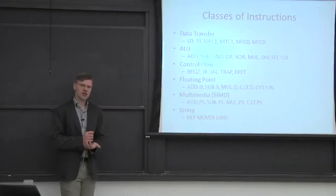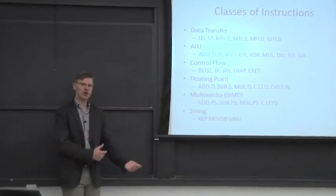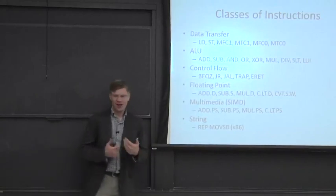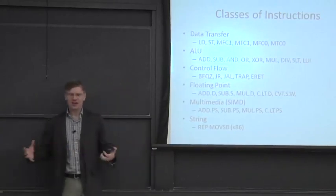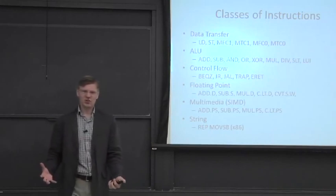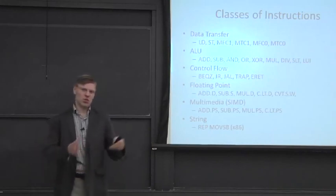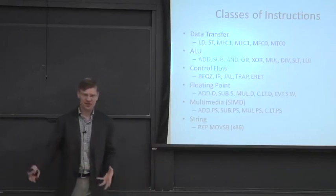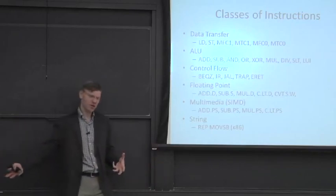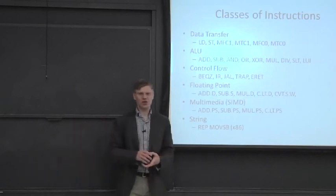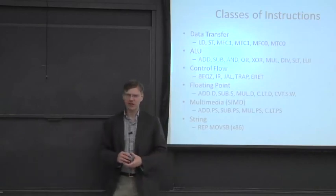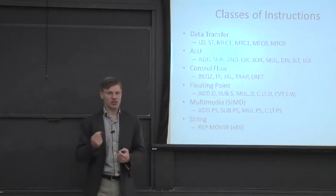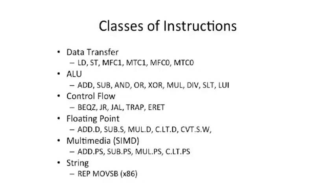Now we're going to change off of machine model and talk about other aspects of instruction set architectures. There's the fundamental machine model: how many registers you have, what type of register access you have, do you have stack-based, do you have an accumulator, do you have a register-register or a register-memory architecture? We also need to talk about the fundamental operations and instructions you have.